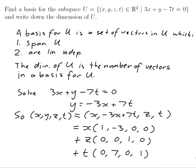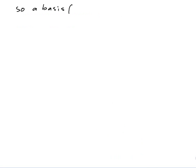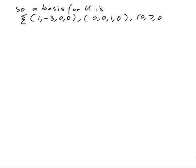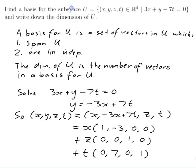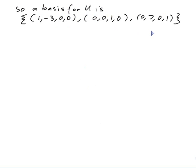So a basis for U is the set containing the three vectors: (1, -3, 0, 0), (0, 0, 1, 0), and (0, 7, 0, 1). The dimension is just the number of vectors in the basis, so the dimension of U is 3.